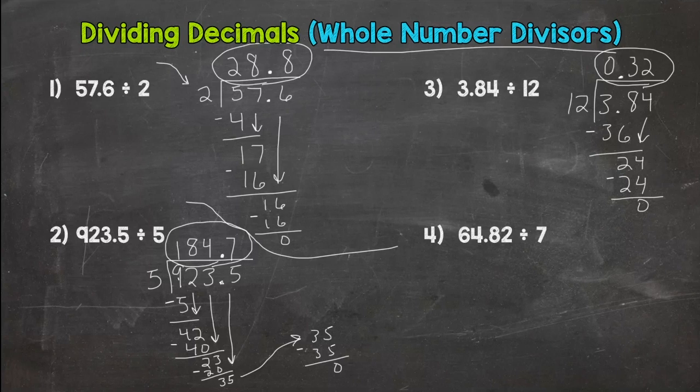All right. And let's go to number 4 here. 64 and 82 hundredths divided by 7. Is the divisor whole? Yes. So what do you do with the decimal? Hopefully you're thinking, bring it straight up. And then we start our problem. I cannot do a 7, a group of 7 out of 6. Can't do 6 divided by 7 and get a whole number. So I need to go to 64.